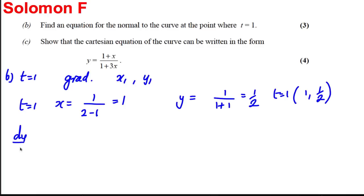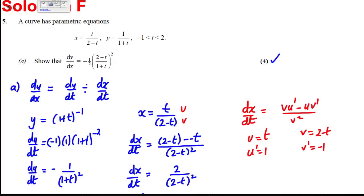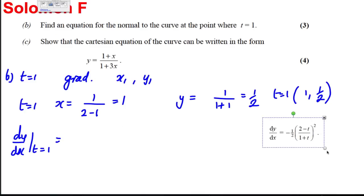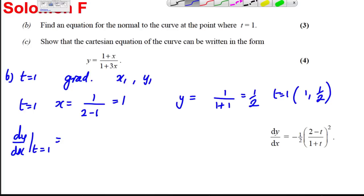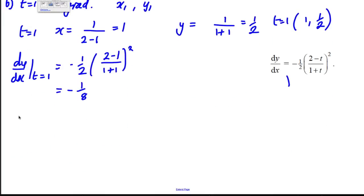Now let's find the gradient, dy by dx, when t is equal to 1. We can use the formula we worked out in part A. We know that dy by dx is equal to negative 1 half times 2 subtract t over 1 plus t all squared. Substituting in t is 1, we would get negative 1 half times 2 subtract 1 over 1 plus 1, all squared, which is the same as a half squared, which is a quarter. So you get negative 1 eighth for dy by dx. That's the gradient of the tangent, so the gradient of the normal must therefore be equal to its negative reciprocal, which is 8.